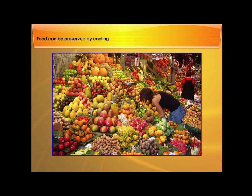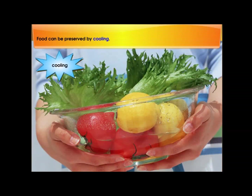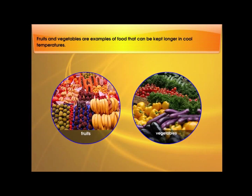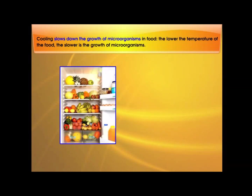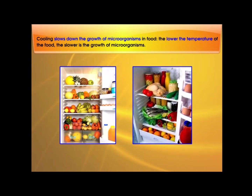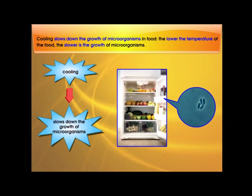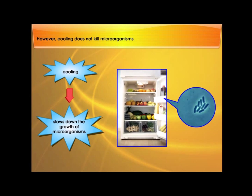Food can be preserved by cooling. Fruits and vegetables are examples of food that can be kept longer in cold temperatures. Cooling slows down the growth of microorganisms in food. The lower the temperature of the food, the slower is the growth of microorganisms. However, cooling does not kill microorganisms.